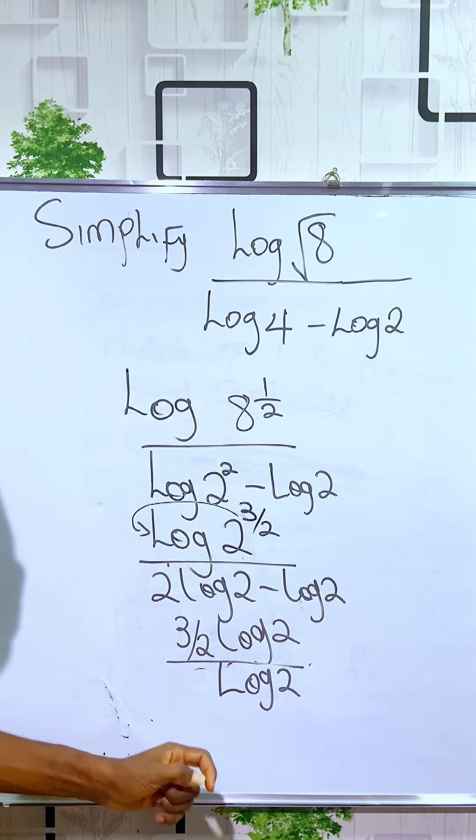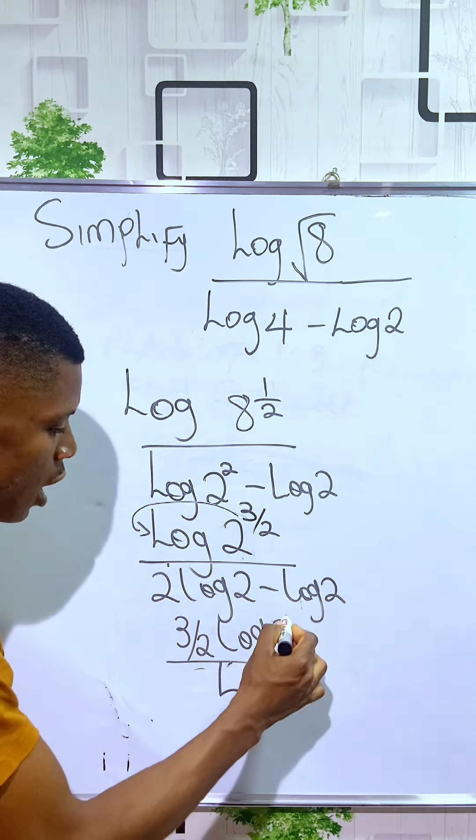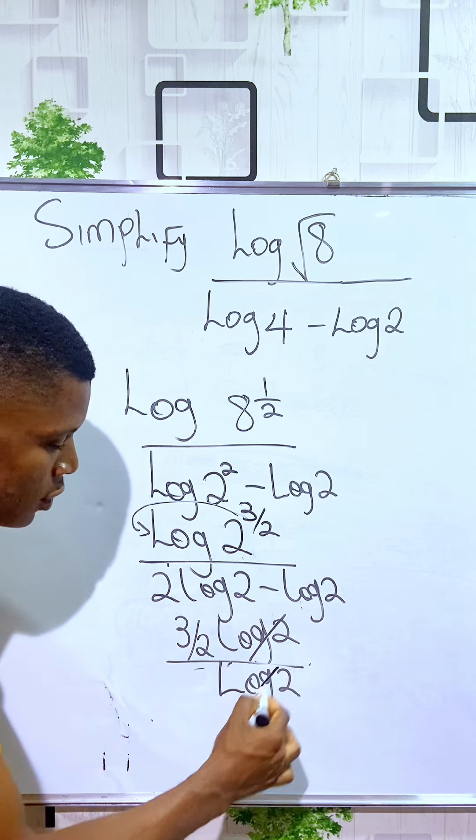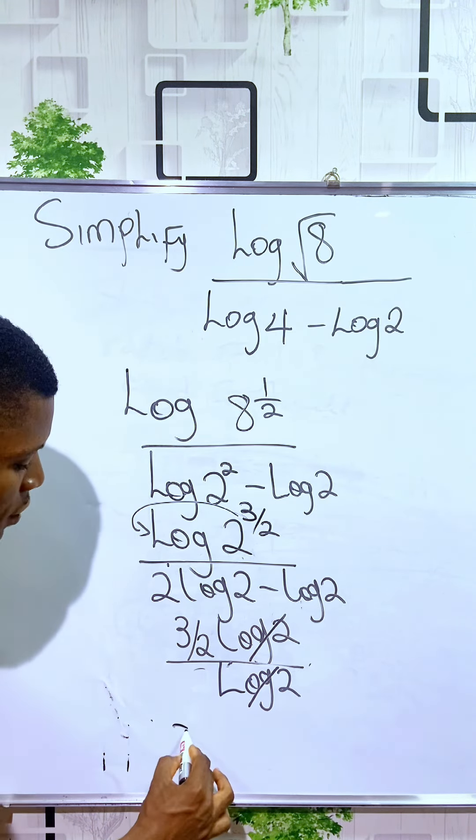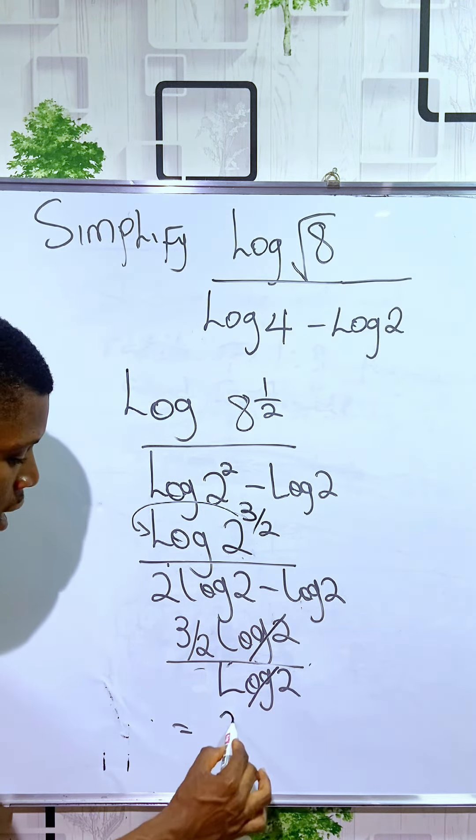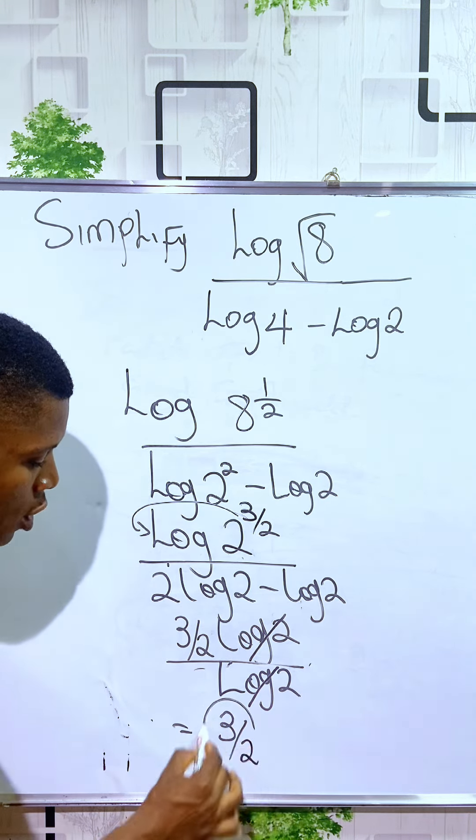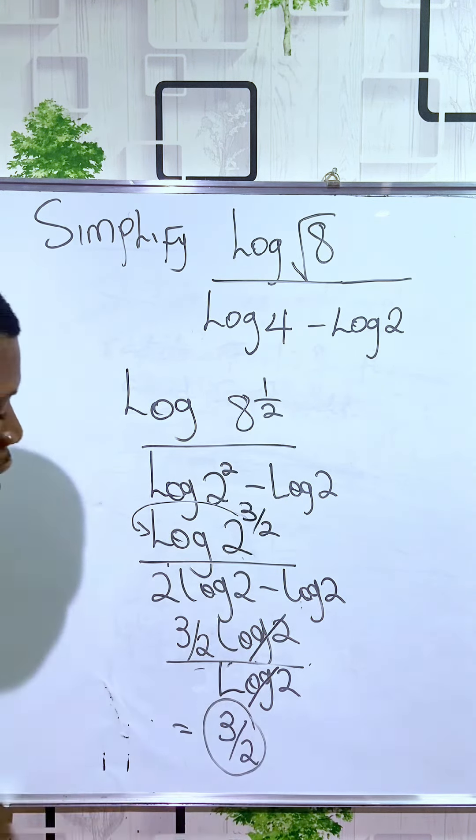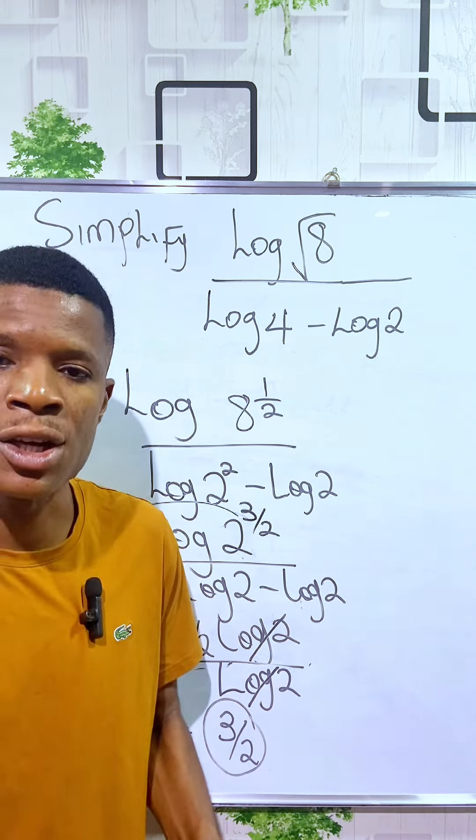So here, since we have this, the log of 2 will cross out the log of 2. You can now see that our final answer is 3 over 2. So simplifying this logarithm is the same thing as 3 over 2.